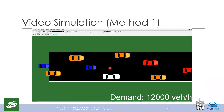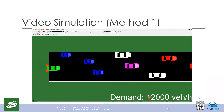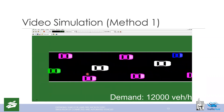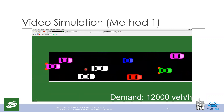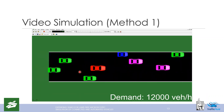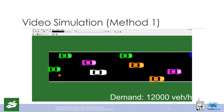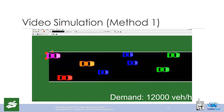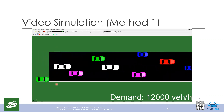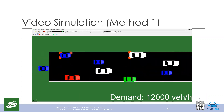Here we see a video simulation of Method 1 at 12,000 vehicles per hour. We have multiple vehicle types with different dimensions, and each time a vehicle tries to find an appropriate lateral placement to enter the road.